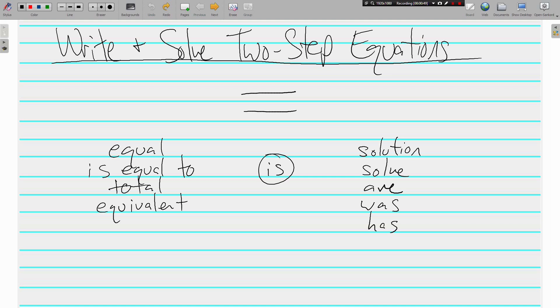solution, solve, are, was, has, but probably one of the ones that you'll see the most is the word is. If you have a bunch of stuff is 12, or a bunch of stuff is 1,000, that word is is your best clue that you need an equal sign.